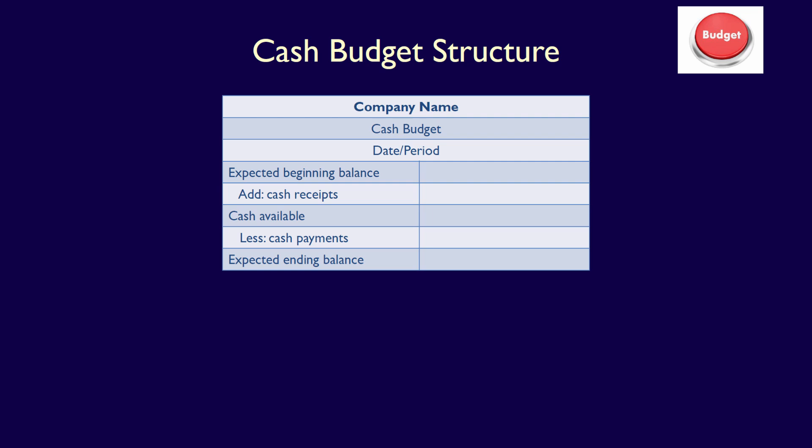The expected beginning balance is the opening cash at the beginning of the period. This might be based on the budget from the past, but it could also be the actual cash balance at the start of the period covered. This is generally given in the question or obtained from the prior period's balance sheet, since the closing cash balance on the prior period's balance sheet would be the opening cash balance for the following period.